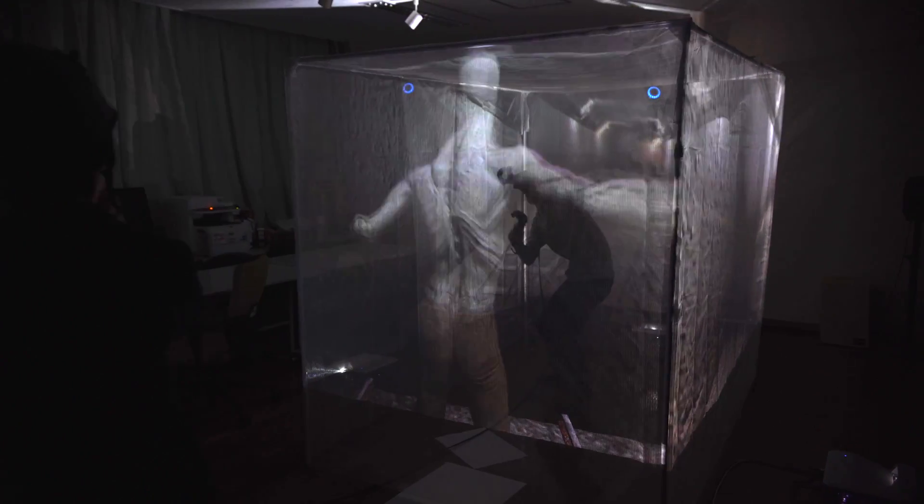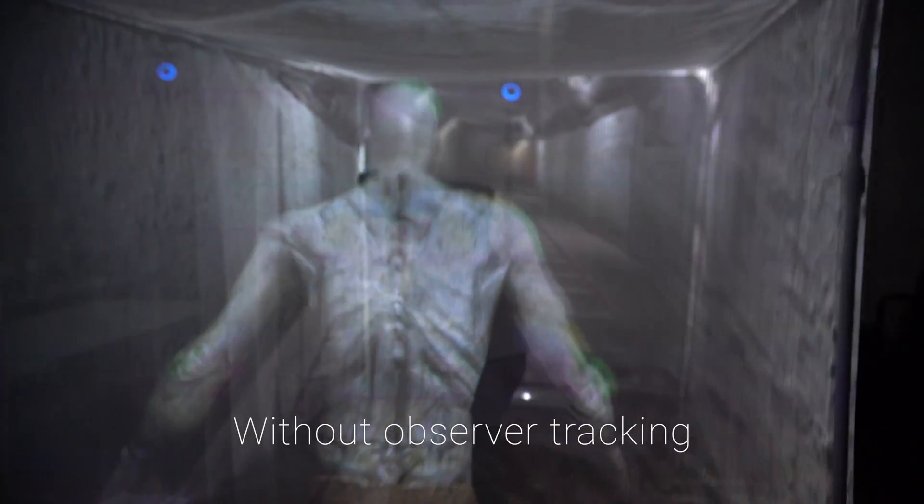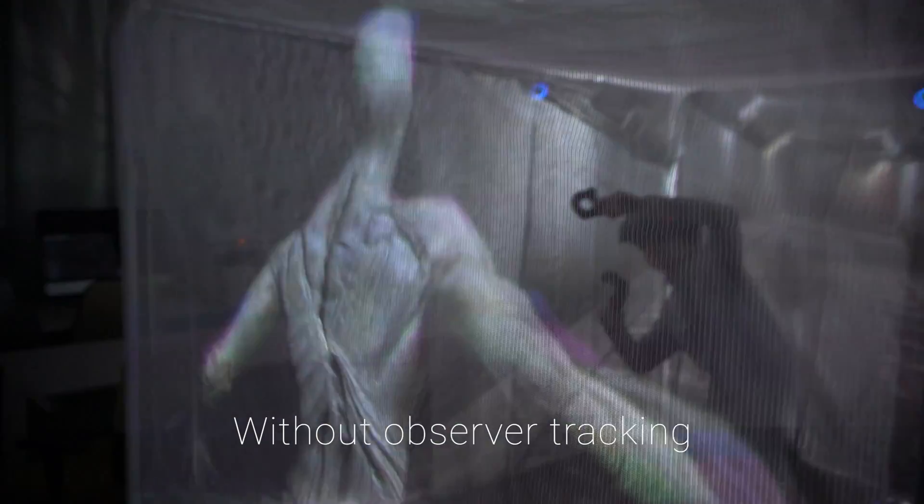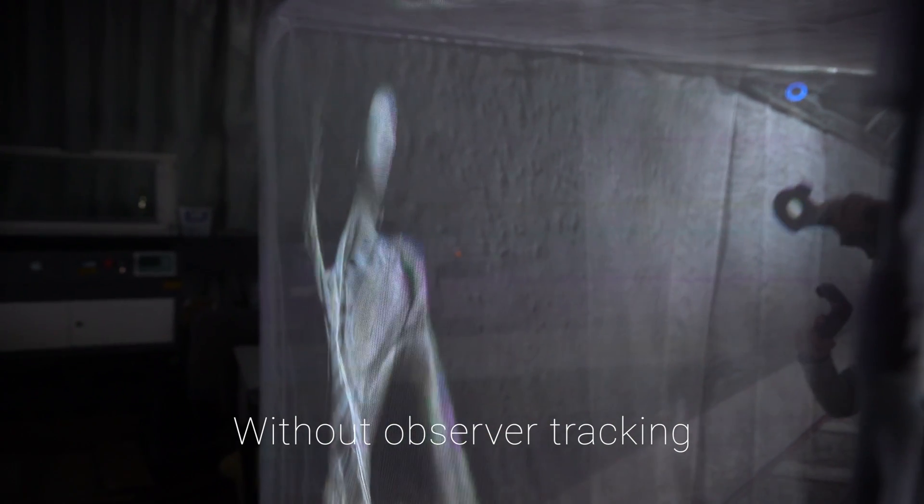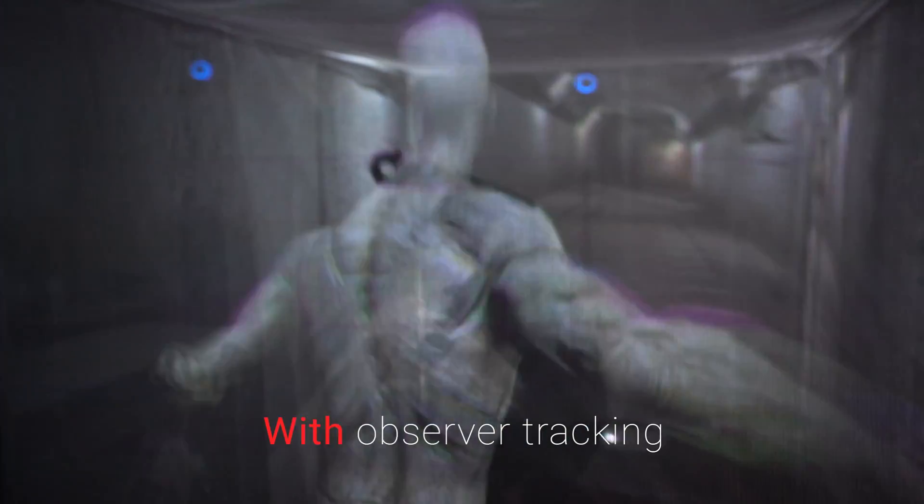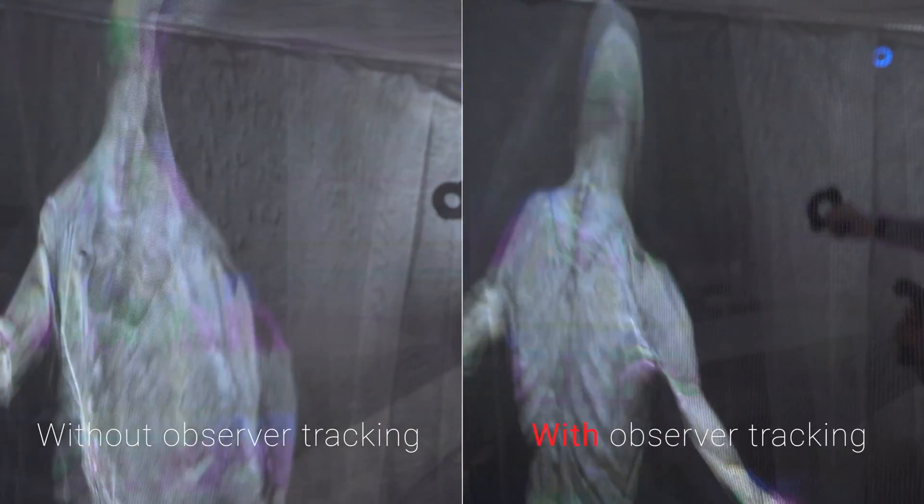The character's position is changed corresponding to the position of the observer. Without observer tracking, the player isn't attacked, because the direction and position of the player and character do not match. With observer tracking, the player and character face each other properly, and the player is attacked properly.